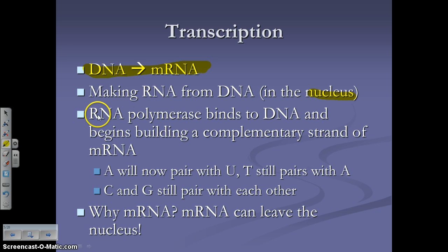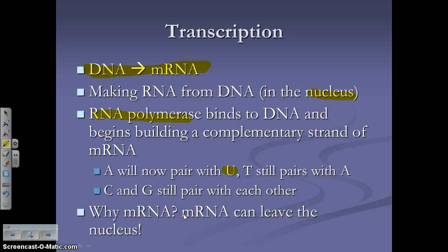You have an enzyme called RNA polymerase — similar to DNA polymerase, but RNA polymerase makes a molecule of RNA. It binds to the DNA and begins building a complementary strand of mRNA. A pairs with U because instead of thymine, we have uracil. If you have an exposed thymine, you pair an adenine; cytosine pairs with guanine; guanine pairs with cytosine. We need this process because DNA can't leave the nucleus, but mRNA can — it literally carries the message from the nucleus to the ribosome.